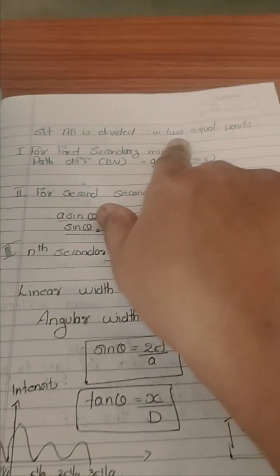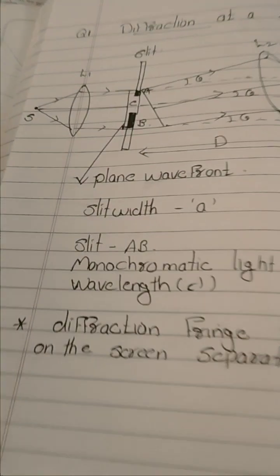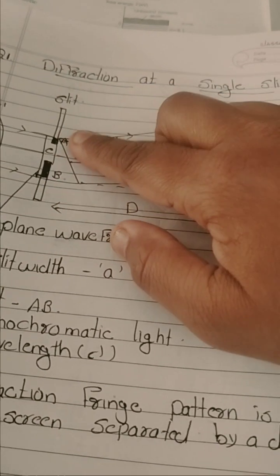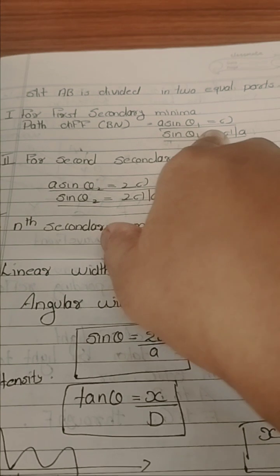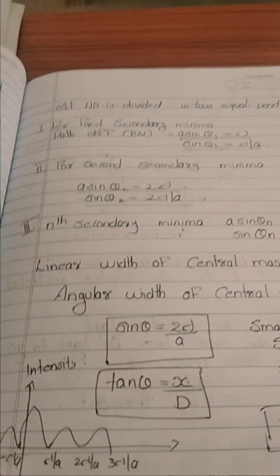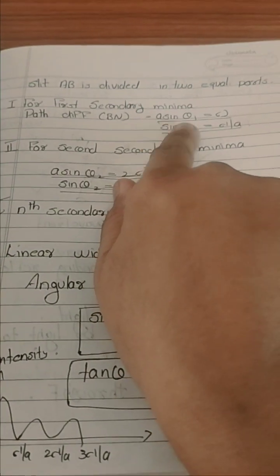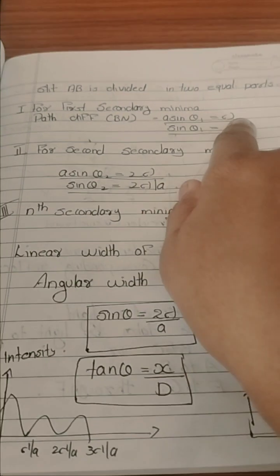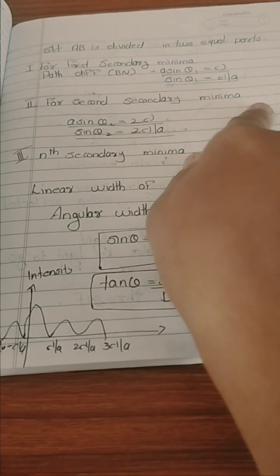Slit A-B is divided into two equal parts: A to C and B to C. For the first secondary minima, the path difference is a sin(theta₁) equal to lambda. Here, 'a' is the slit width, theta is how much it is inclined, and lambda is the wavelength. So sin(theta₁) equals lambda by a.